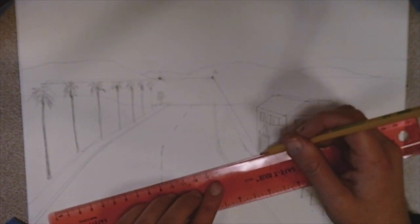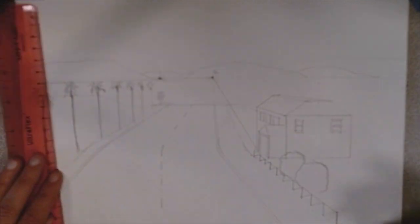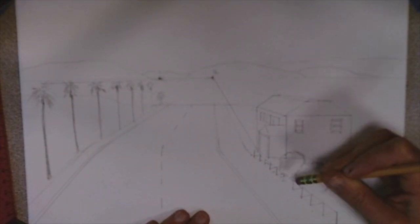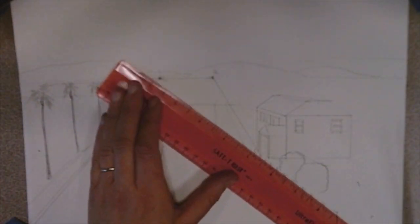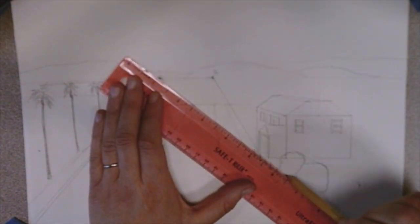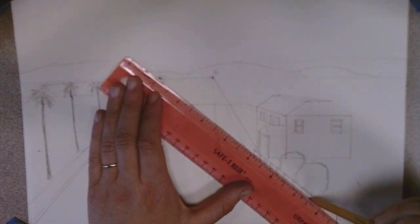You're drawing it at the same degree, the same angle for each one, and then you erase it when you're done. That helps to get the spacing between each fence post accurate.